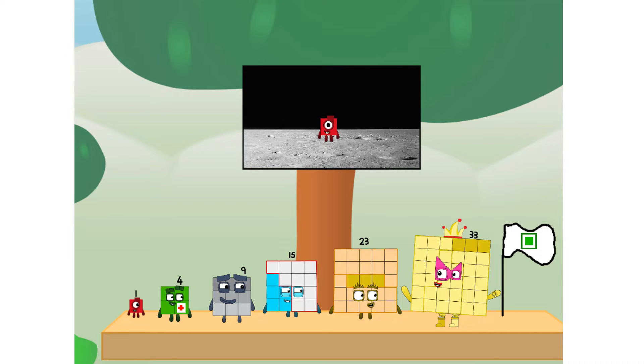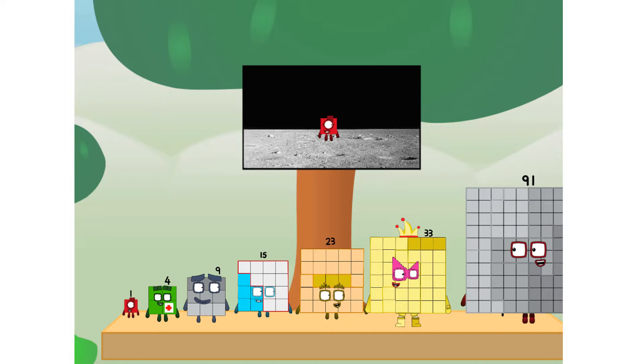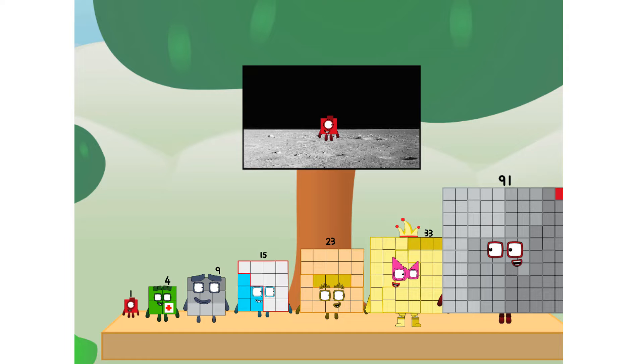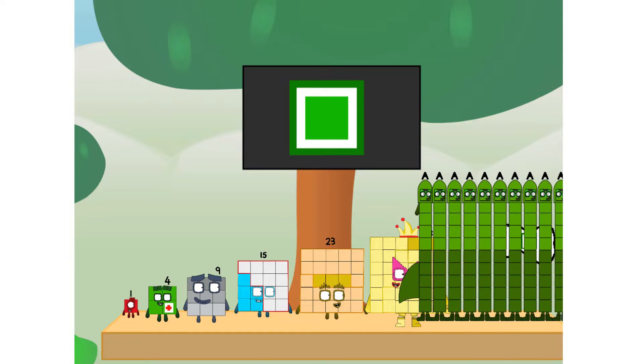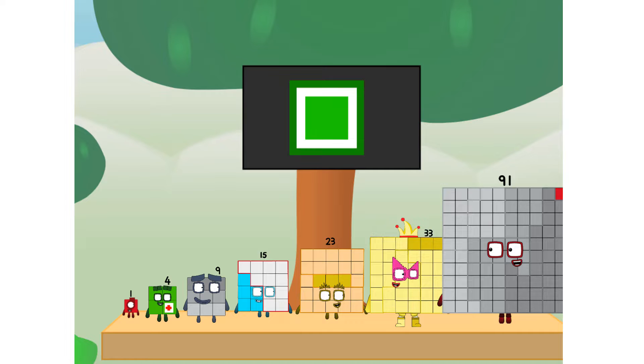We did it! The only thing left now is to plant the square club flag. Number one, we have a problem. I forgot the flag. Don't worry, little one, I'll take care of this. 91, and I promise, no rockets, square power only.